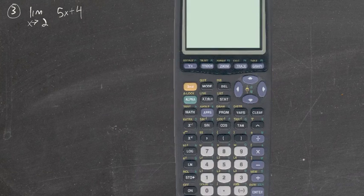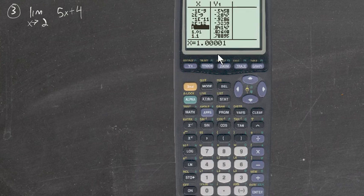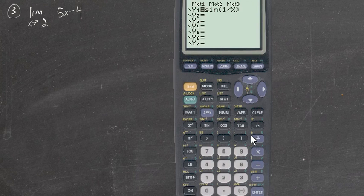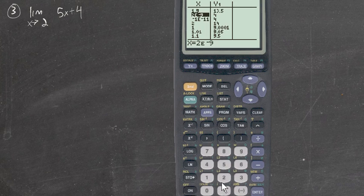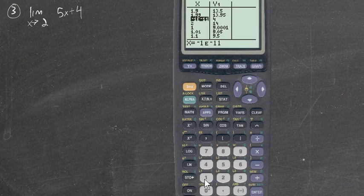And then we're supposed to determine if the limit can be reached — that means does the function take on that value that the limit is. So let's use our calculators. We'll clear that out and do 5x plus 4. Look at the table. We'll get close to 2, like 1.9, 1.99. Let's get really close. Looks like it's getting close to 14.